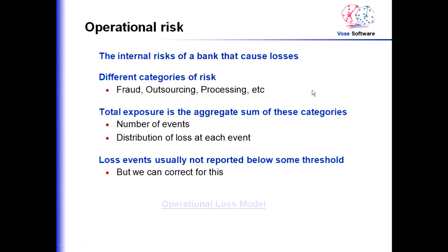The second type of risk for Pillar 1 models is operational risk — the internal risks of the bank that cause losses. There are many categories: fraud, outsourcing, processing of transactions, and more. The total exposure is the aggregate sum of these different categories. You could have a number of fraud events, each with a distribution of loss size. For example, three frauds in a year where one costs $10,000, another $100,000, and another $1,000,000.